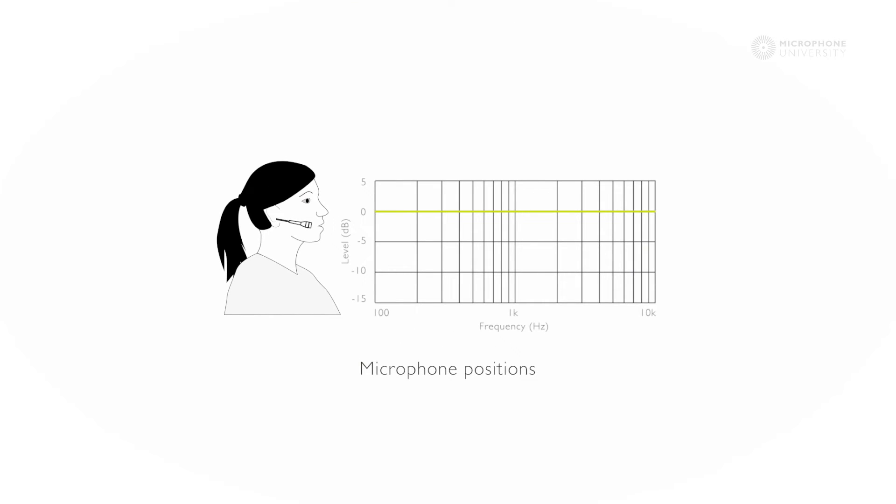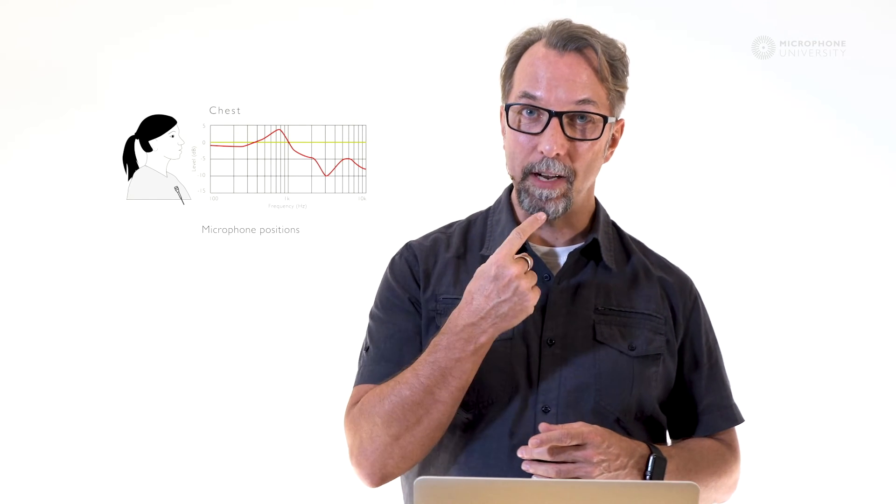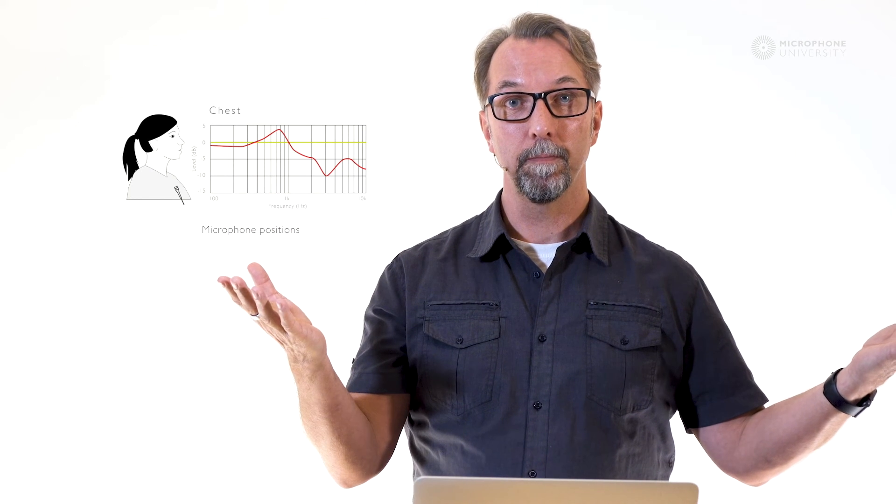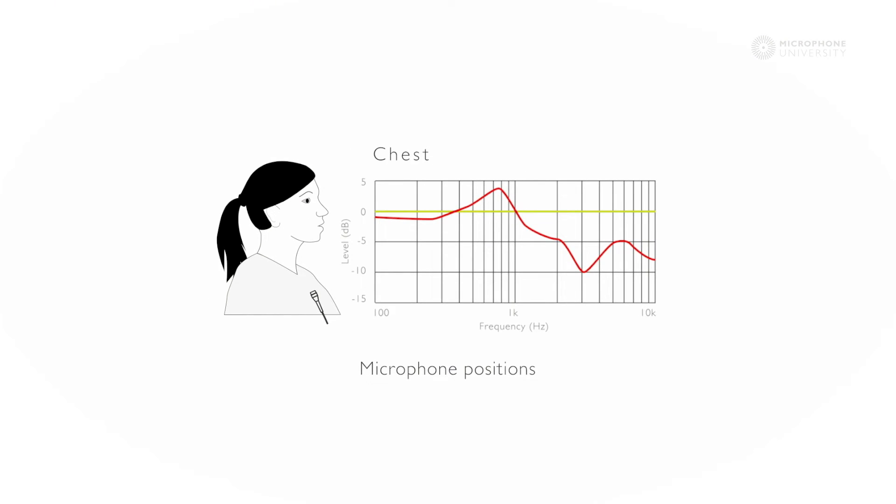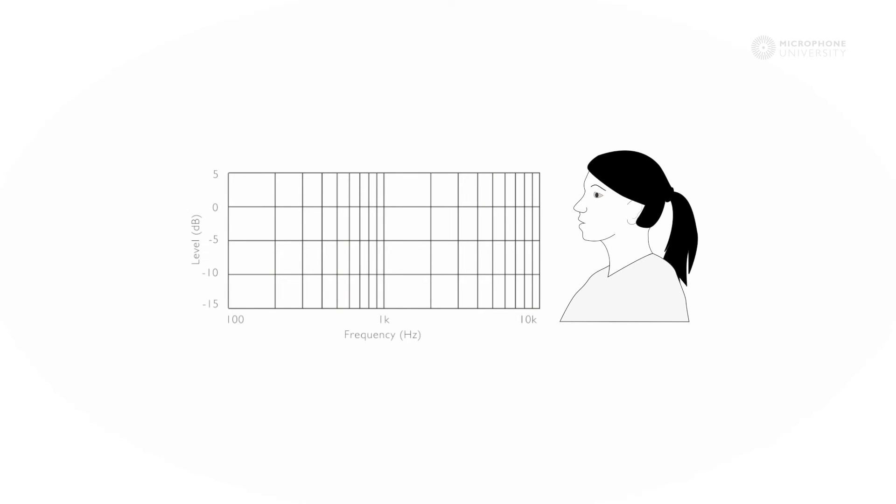The next position is the typical lavalier position on the chest, which introduces a few challenges. One challenge is that the level of the direct sound of the voice is much lower than on the headset position, and we therefore pick up much more background noise. And frequency-wise, we lose not only the high frequencies, but much more in the mid-range, again compromising the speech intelligibility. And again, here are all four positions without me interrupting in between.